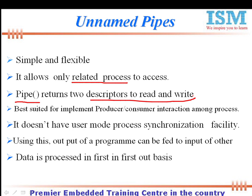Internally this pipe doesn't have any user-mode process synchronization facility. Synchronization is a facility which allows you to make a process perform an operation on an event. Whenever you write data into a pipe, you cannot make a specific process become ready to read — any child process could read and anybody could write. There is no explicit or implicit synchronization mechanism; if you want synchronization, you have to explicitly implement it.